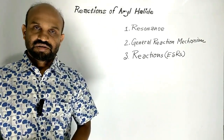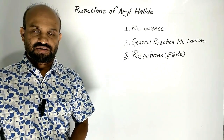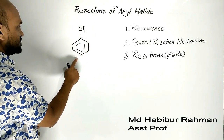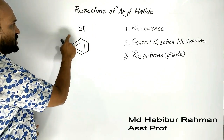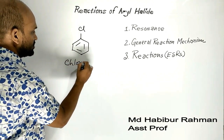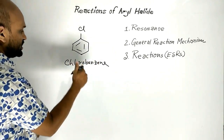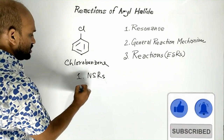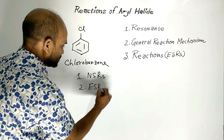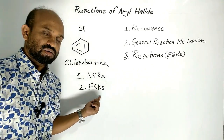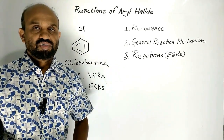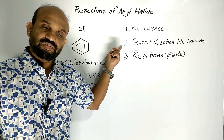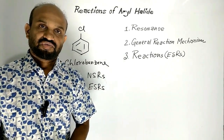Today's lesson is reactions of aryl halides. One example of aryl halide is phenyl chloride or chlorobenzene. Chlorobenzene undergoes nucleophilic substitution reactions as well as electrophilic substitution reactions. In this lesson, we are going to learn electrophilic substitution reactions of chlorobenzene through resonance, the general reaction mechanism of chlorobenzene, and finally some electrophilic substitution reactions.